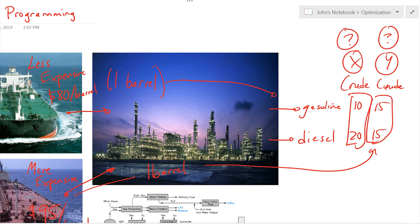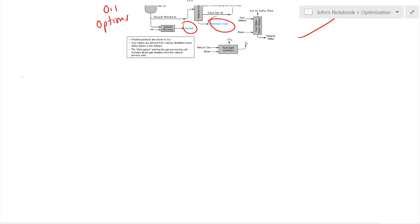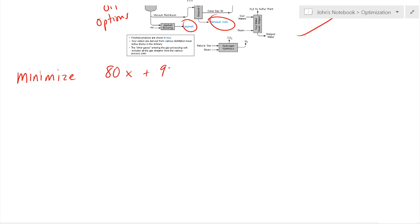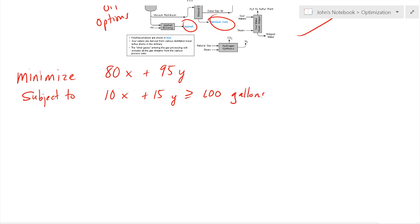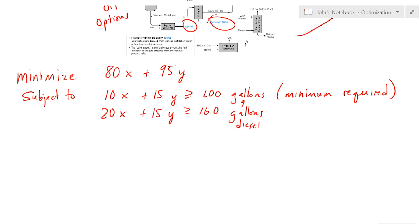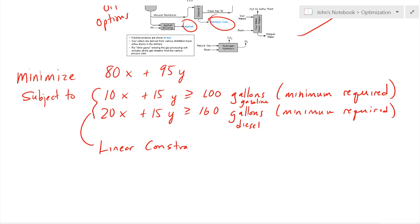We have two decision variables x and y. Written in optimization form: minimize 80x + 95y, subject to the gasoline constraint — you have to produce at least 100 gallons, so 10x + 15y ≥ 100 — and the diesel constraint: 20x + 15y ≥ 160 gallons. These are linear constraints with a linear objective function.